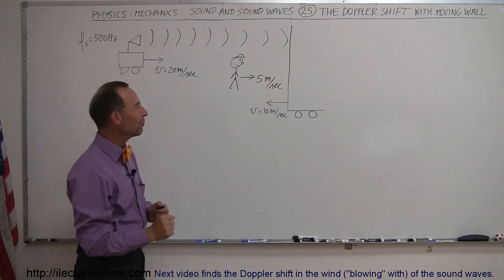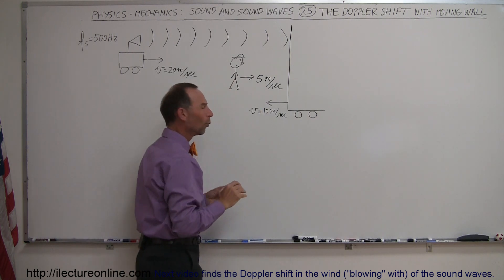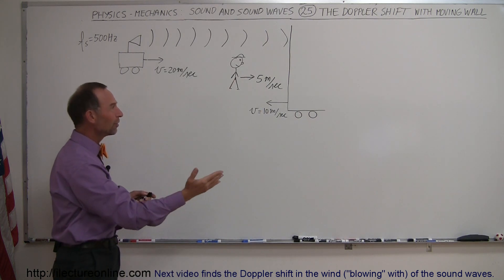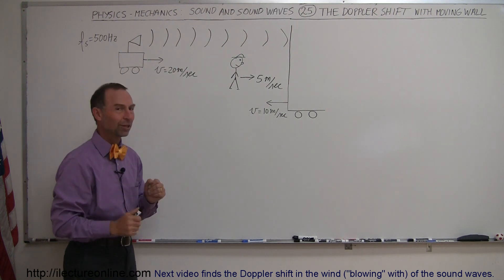Now this wall is going to be a moving wall. It's actually moving to the left and then an observer is moving towards the wall. What is the effect of this wall moving towards the observer and moving towards the source going to have on the frequency that this observer hears?